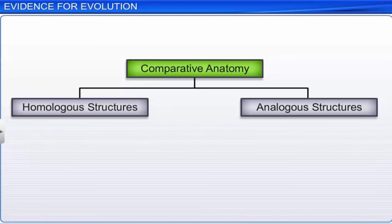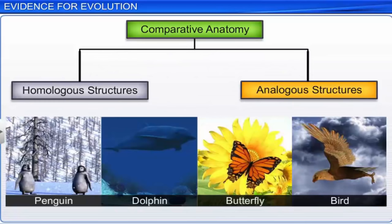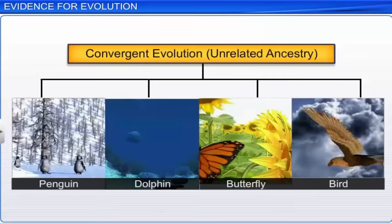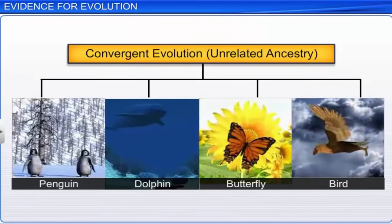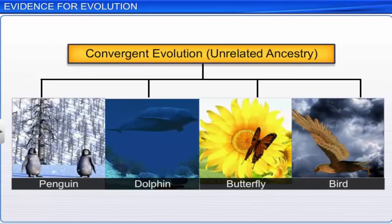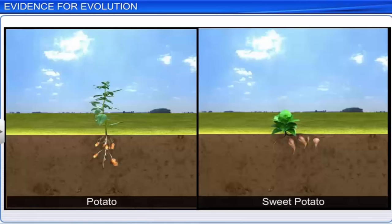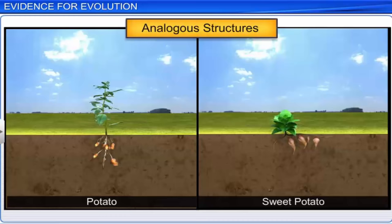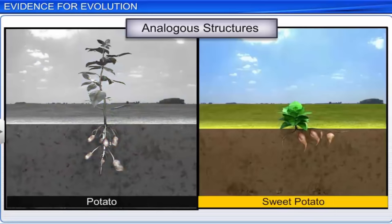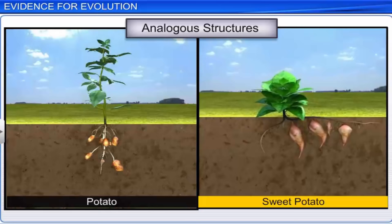On the other hand, when anatomically different structures evolve to perform similar functions in different organisms, they are known as analogous structures. For example, the flippers of penguins and dolphins, and the wings of butterflies and birds, are analogous structures. Since these animals have similar structures but unrelated ancestry, they point to convergent evolution. In plants, examples of analogous structures are potato and sweet potato, which are modified stem and modified root, respectively.